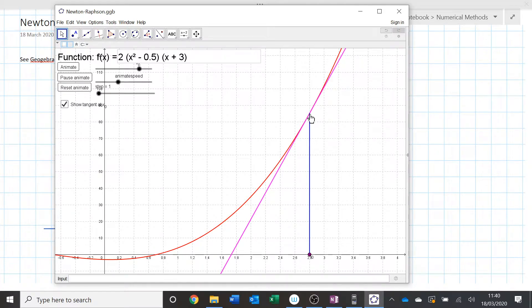This is going to be the coordinate x0, f of x0, because it's put into the function. We can put it in there. We can find the gradient at that point. We can construct the equation of the tangent at that point. And then we can find where the tangent crosses the x-axis. And that's going to be x1.